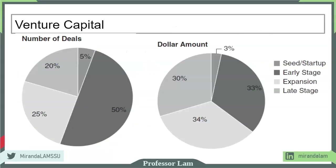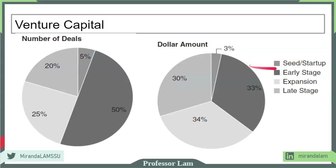Here's a final overview of venture capital. As you can see, 50% of deals by number are in early stage — those are the angel investor deals. But in terms of dollar amount, the majority is in expansion and late stage. Venture capital is very unlikely to be at the seed or startup stage: only 3% of dollar amount and 5% of deal count. This concludes the overview for chapter four, and I'll see you again soon.